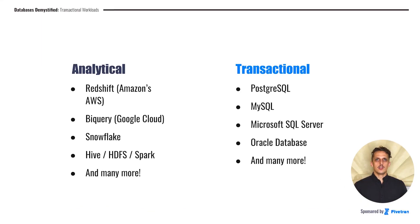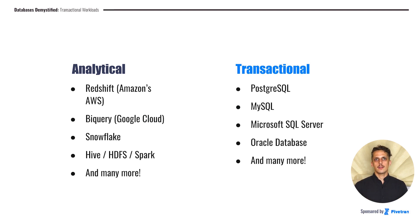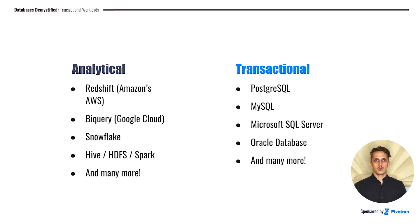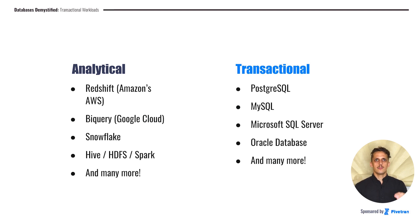Here are a few technologies that you might be familiar with that fit into these different paradigms. On the analytical side, we have data warehousing tools like Redshift, BigQuery, and Snowflake, as well as the MapReduce family of tools like Hive, HDFS, and Spark. On the transactional side, some very common tools are PostgreSQL and MySQL—both open source—and on the proprietary side, we have Microsoft SQL Server and Oracle Database. These aren't all of the databases within these paradigms, but they are important to know about, and if you've worked with them in the past, it might help you understand why they work the way they do and what they're optimized for.